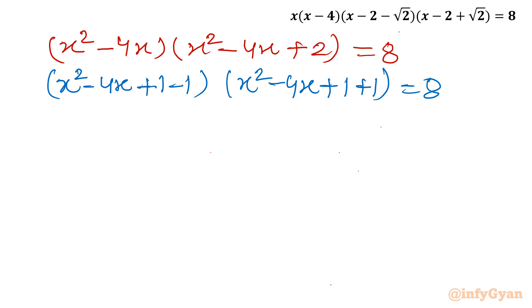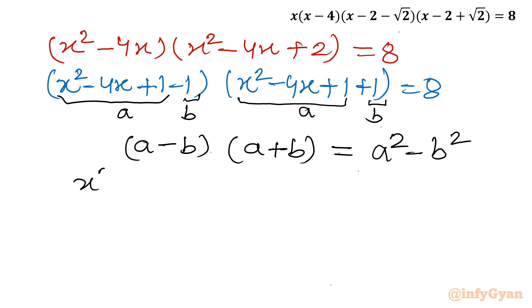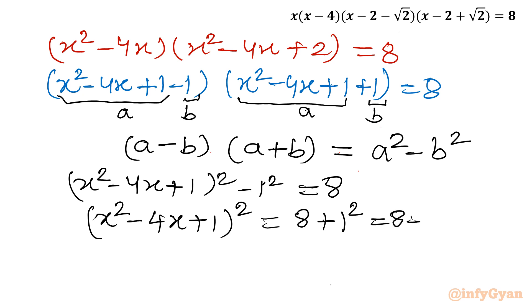If I let a = x² minus 4x plus 1 and b = 1, the first bracket is (a minus b) and the second is (a plus b). So instead of writing these two products we can use the difference of two squares: a² minus b². I write (x² minus 4x plus 1)² minus 1² equals 8. Adding 1 to both sides gives (x² minus 4x plus 1)² equals 9.